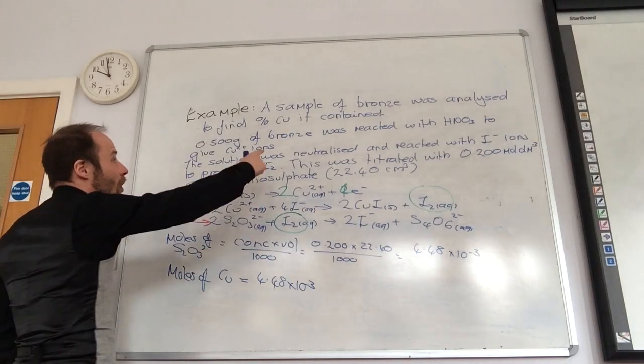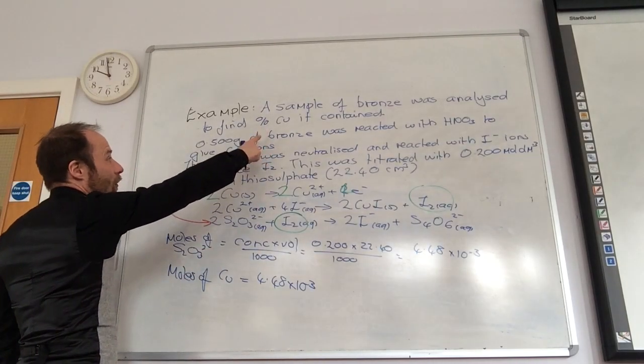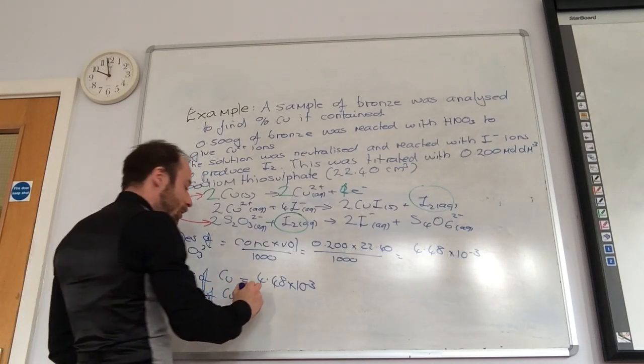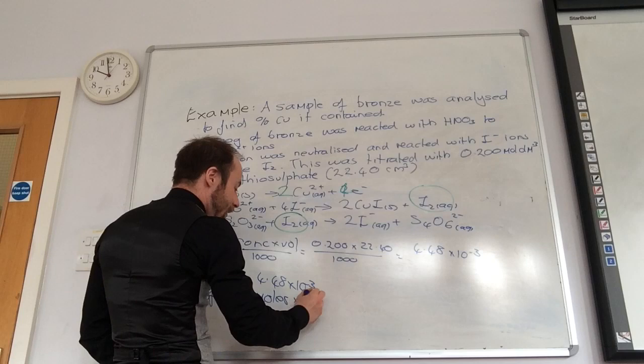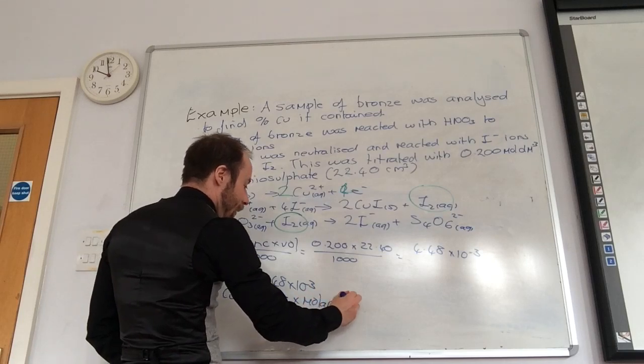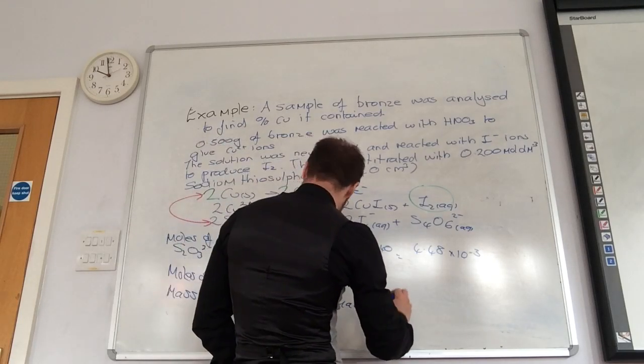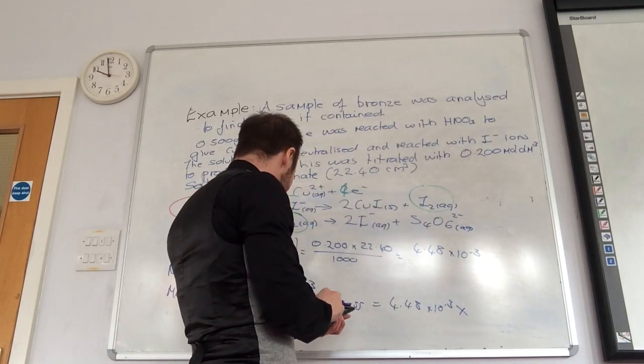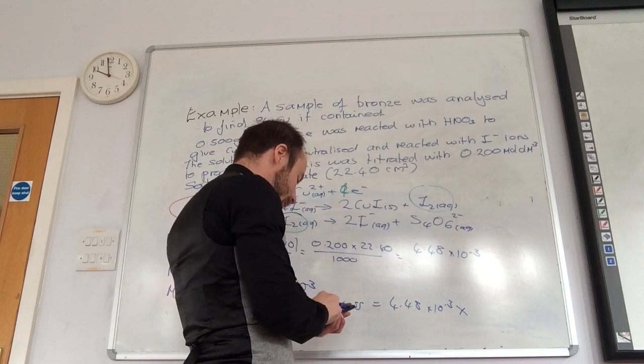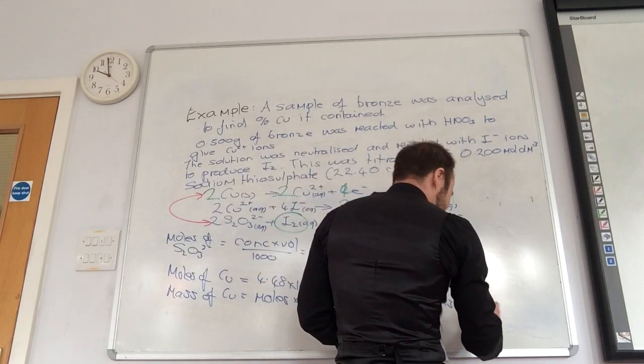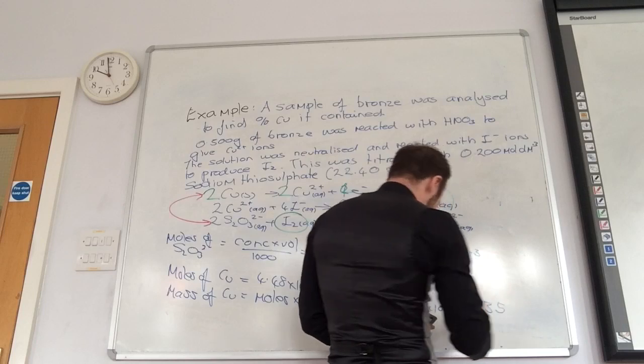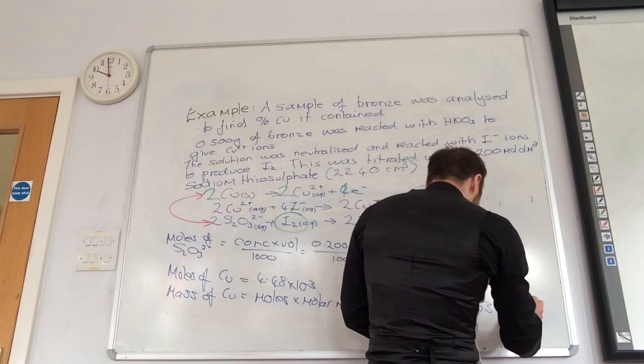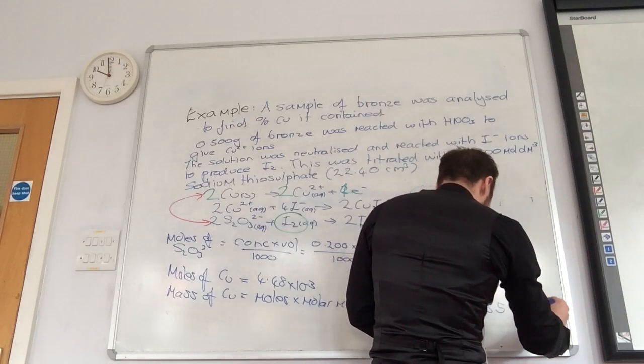What do I want to work out? I want to work out the percentage of copper, don't I? So I need to now convert that to a mass of copper, which is moles times molar mass, which is going to just equal 4.48 times 10 to the minus 3, times by the molar mass of copper, which is 63.5. That gives me 0.285 grams.